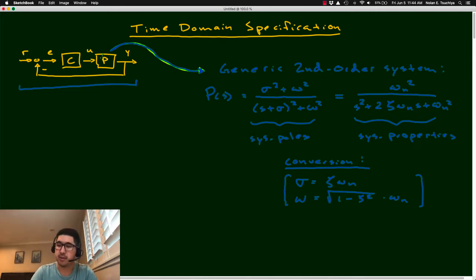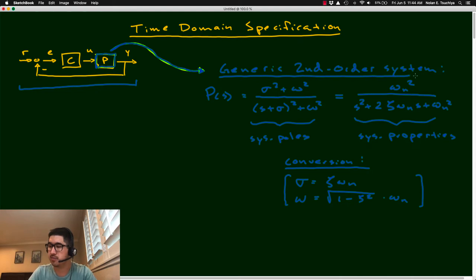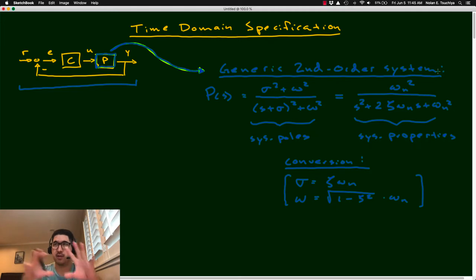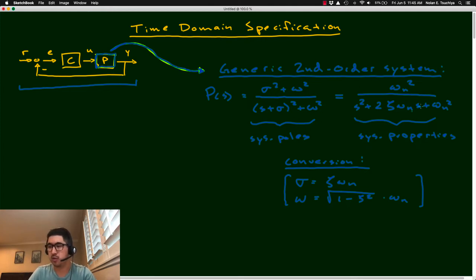We're still focusing on the plant within this feedback control system. For the purposes of the time domain specification, we're going to consider the plant to be a second-order system. Second-order systems are the minimum order required to see any interesting oscillatory response. First-order systems, when hit by an impulse or step input, show no oscillation because there's only one real pole on the real axis. Second-order systems have potentially pairs of complex poles out in the S-plane, and that's the minimum order required to see those interesting dynamics.